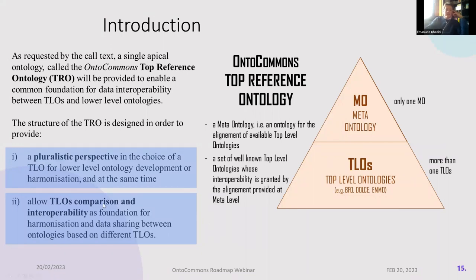Chapter 3.1 is about the top reference ontology — the apical part of the pyramid in which we try to put together different top-level ontologies and find common grounds in order to facilitate interoperability also at lower levels. We are starting from a pluralistic perspective in order to host all the possible approaches to knowledge representation.